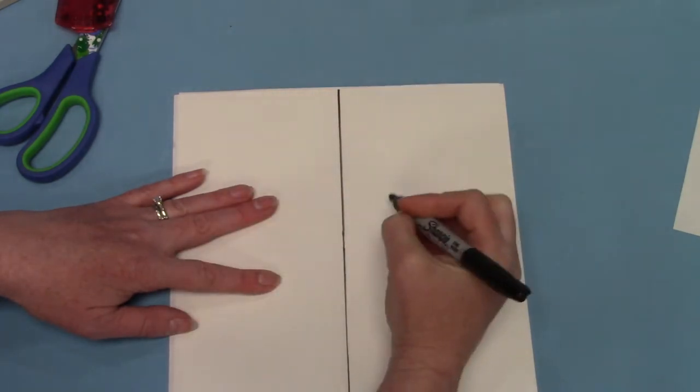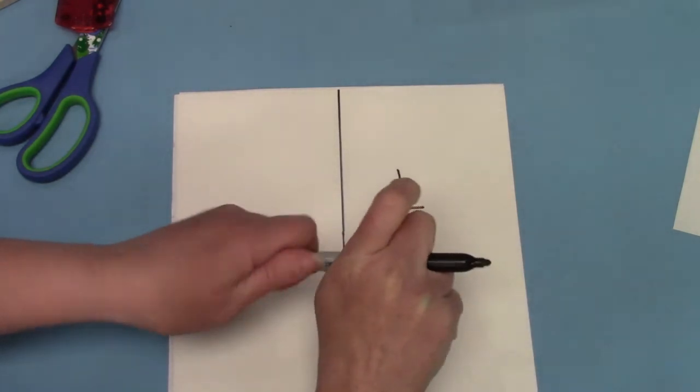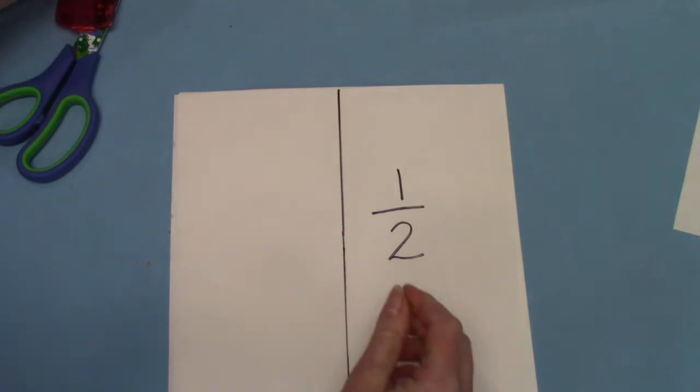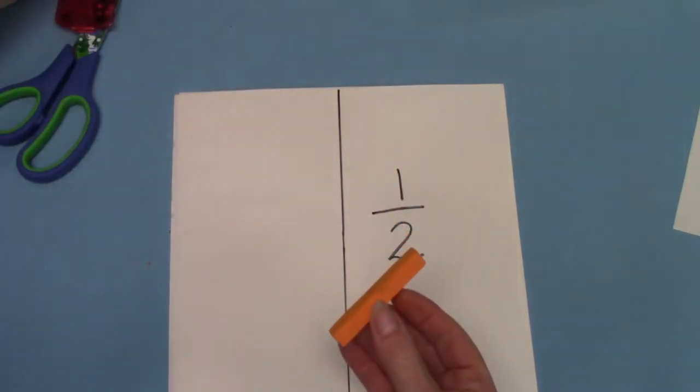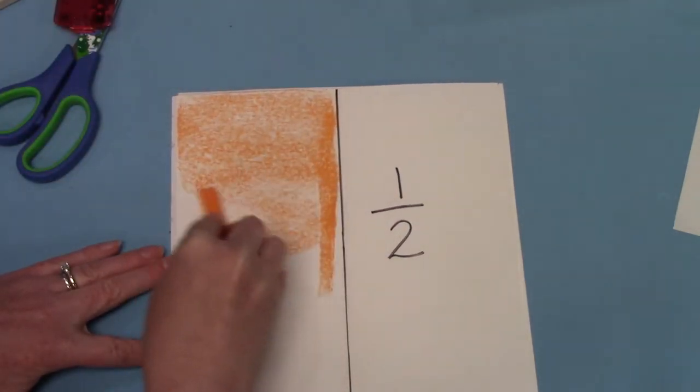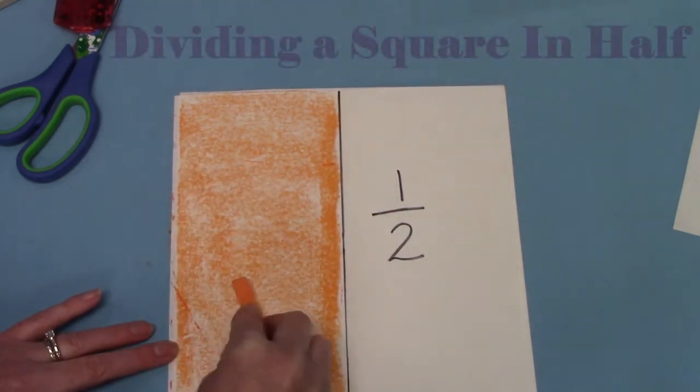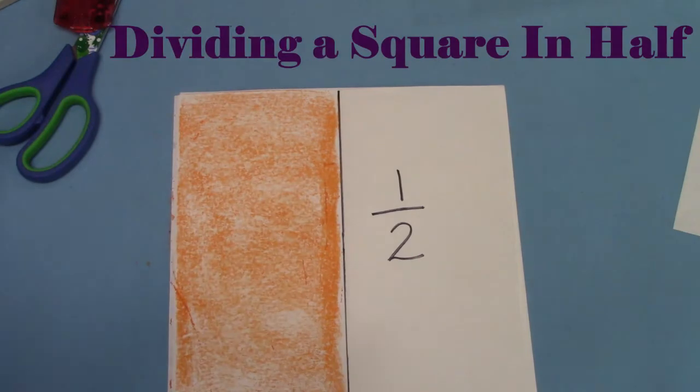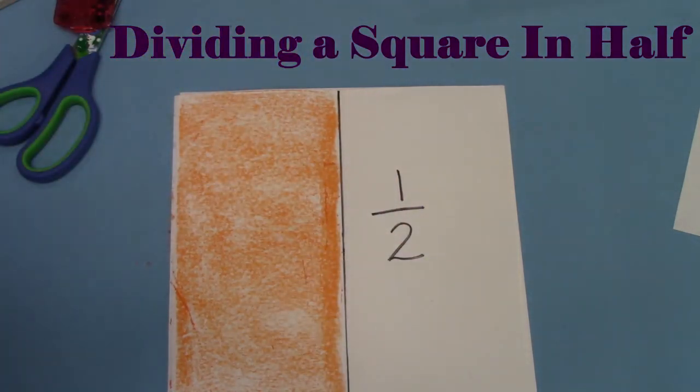There are two pieces now in the square and I'm going to color one out of the two pieces. One half. I'm going to get my orange chalk pastels and I am going to color half of the square. Can you color half of your square? There we go. Oh my fingers are messy again. One out of the two pieces have been colored.